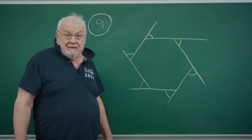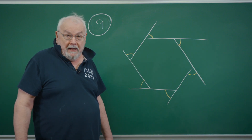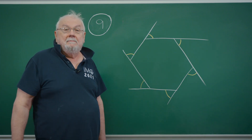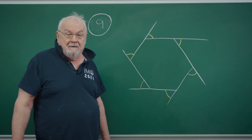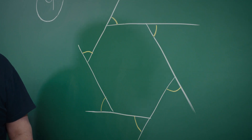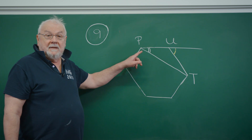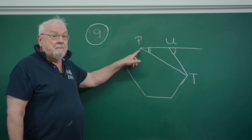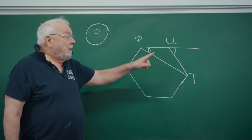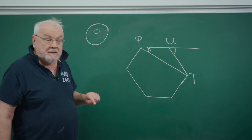This means that six lots of this yellow angle working together make 360 degrees. They're all the same, so each of these external yellow angles must be 60 degrees. We're interested in the angle marked at P, and the only thing we know so far is that yellow angle — it's 60 degrees.